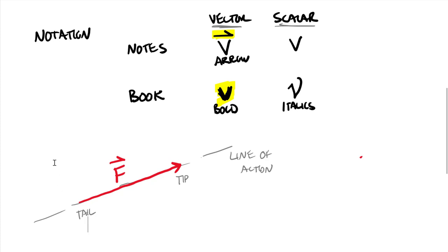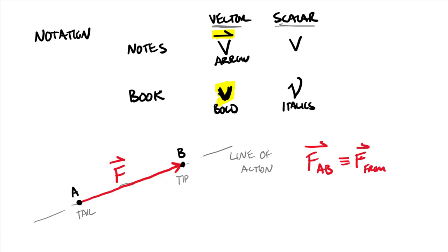We can identify a vector between points. If I call the tail point A and the tip point B, I label that F_AB — always defined as from A to B, the force going from A to B. In dynamics, there's also a relative format written as F of B relative to A. These two are exactly the same thing — either the from-to notation or the relative-to notation, which is more of a vector displacement mentality.